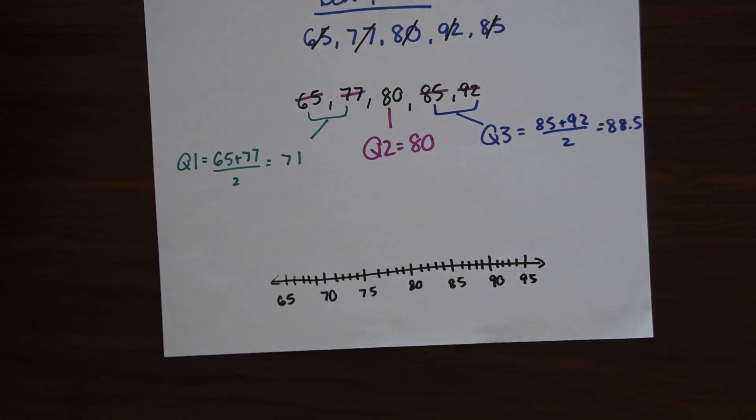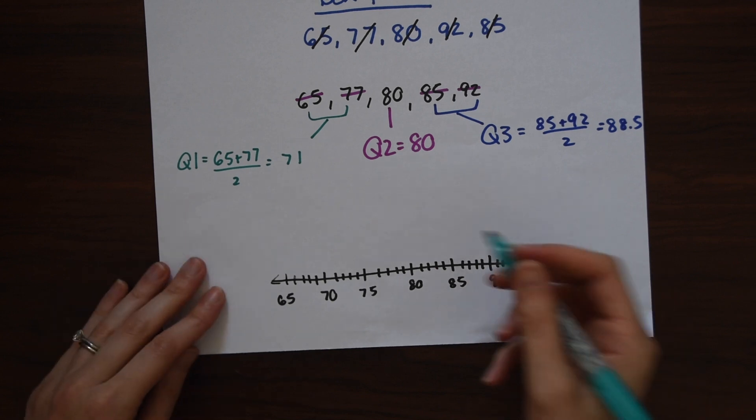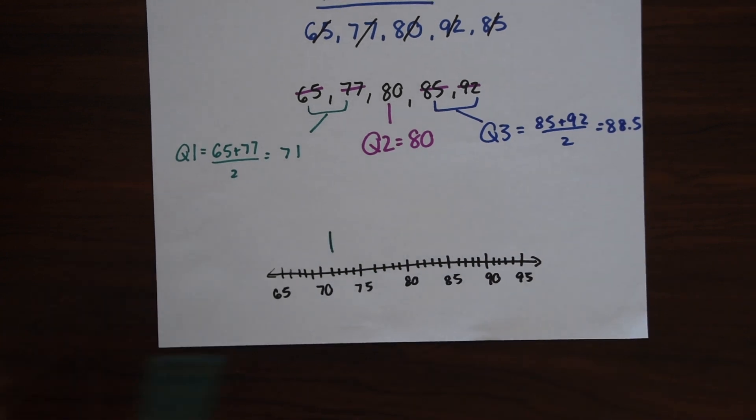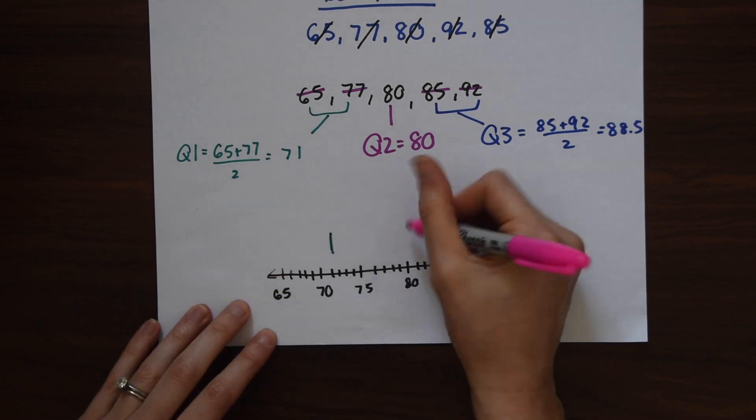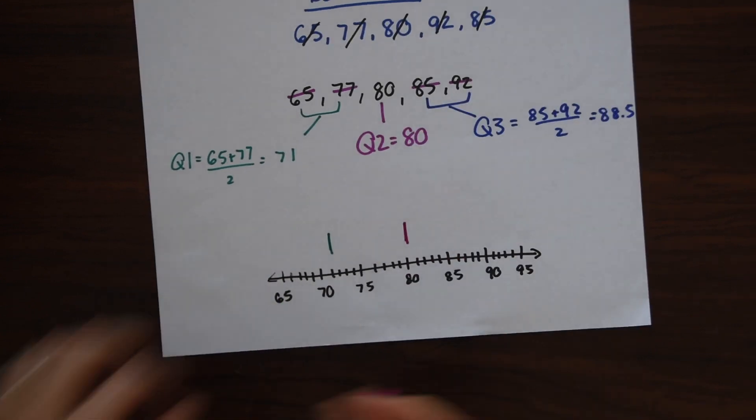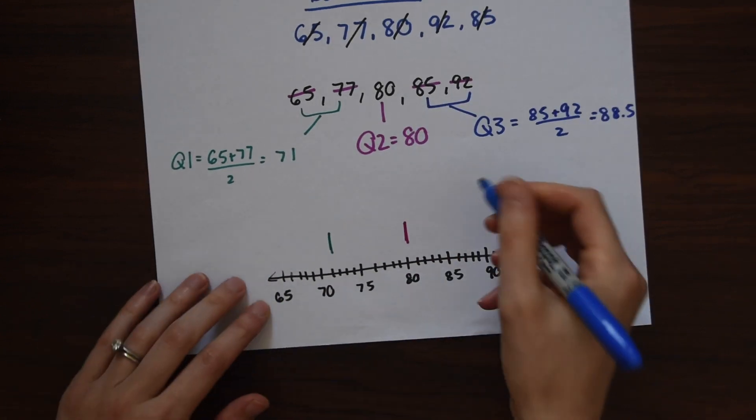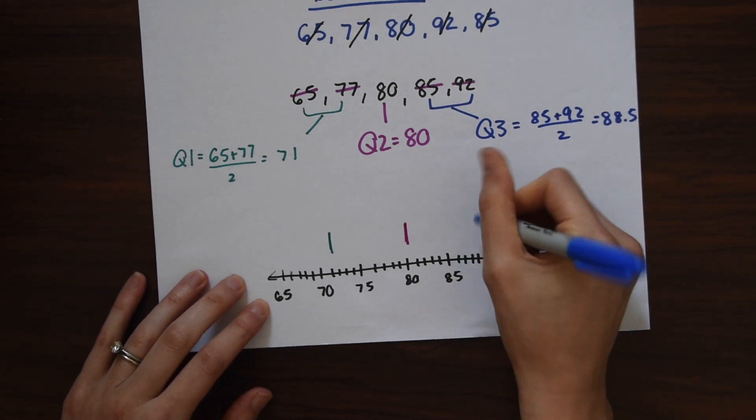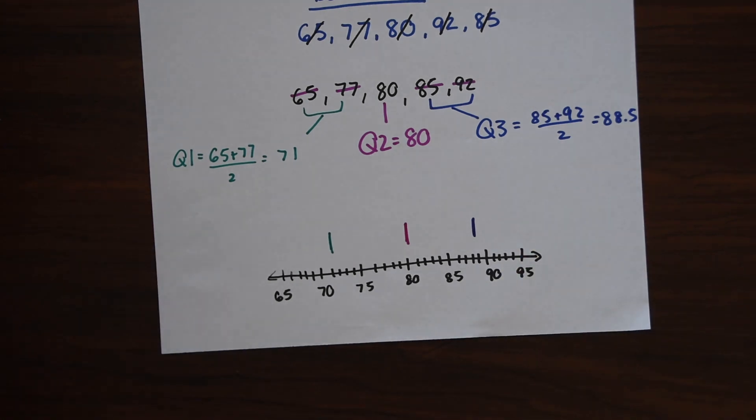So now we're just going to mark all our quartiles on our number line. So 71 is over here, quartile 1. Quartile 2 is 80 right here. And quartile 3 is 88.5. So 86, 87, 88, and kind of an in-between right there, .5.